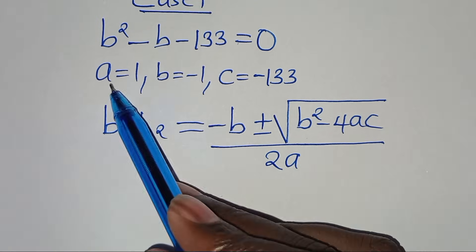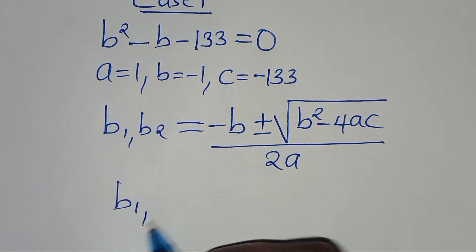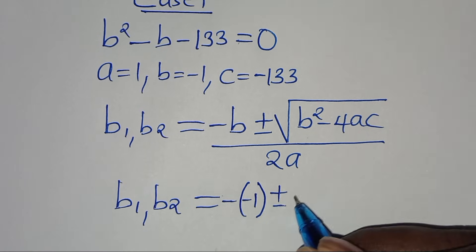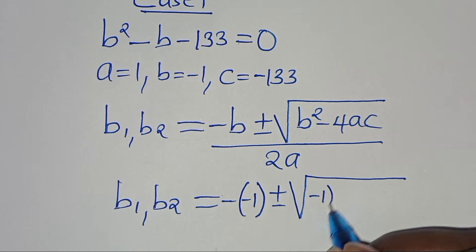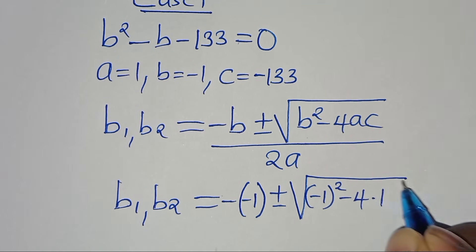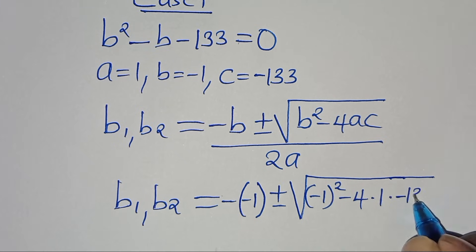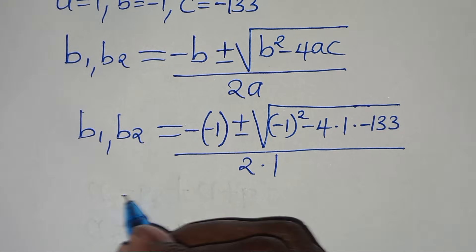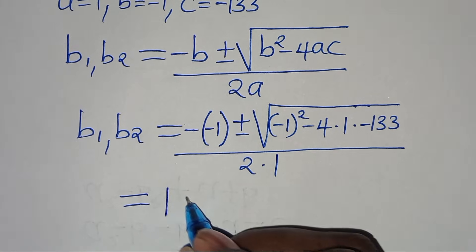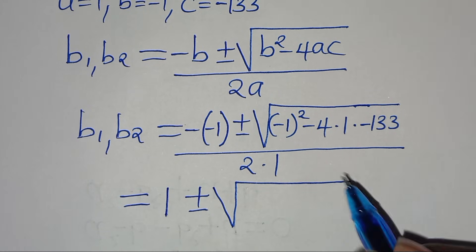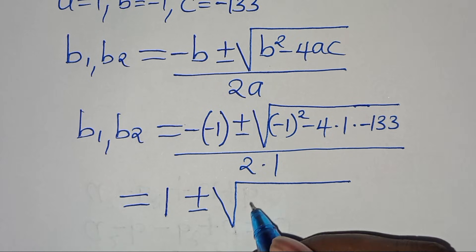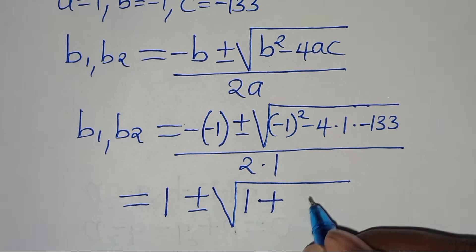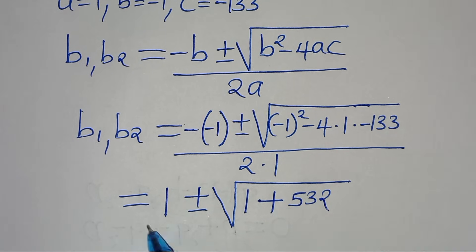Substituting into the formula, b1 and b2 equal negative of negative 1, plus or minus the square root of negative 1 squared minus 4 times 1 times negative 1/3, all divided by 2 times 1. This simplifies to 1 plus or minus the square root of 1 plus 4/3, divided by 2, which gives 1 plus or minus the square root of 7/3, divided by 2.